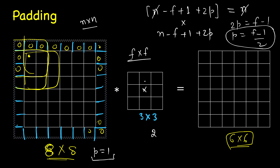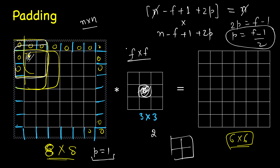Another reason we use odd-sized filters is that it gives a notion of a central pixel. If you have an even-sized filter like 2x2, there is no central pixel. With an odd-sized filter, when we overlap it there is a well-defined central position. Although that is not the strongest reason alone, it does support the preference.